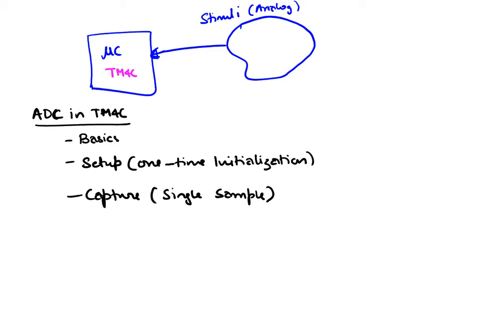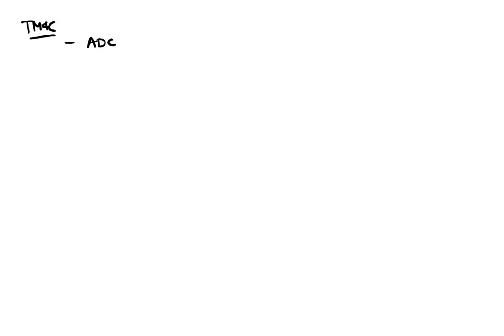Let's first understand the basics of ADC on TM4C. You already saw how analog to digital conversion works. But first, on our microcontroller, the TM4C, there are actually two ADC chips on it: ADC 0 and ADC 1. We will mainly be using ADC 0. These are two separate ADC hardware components that can be used for performing ADC.